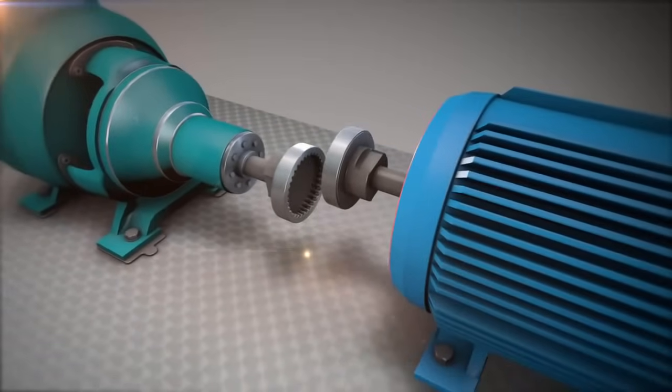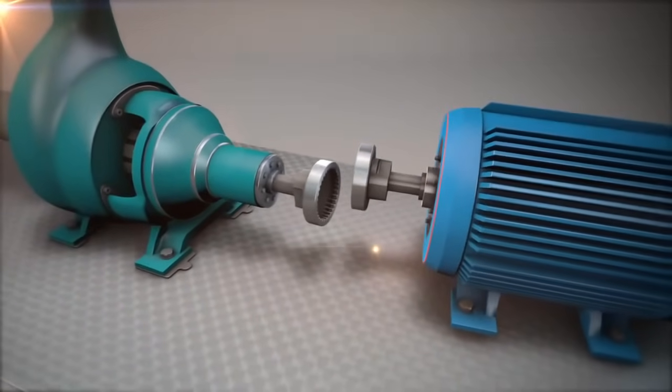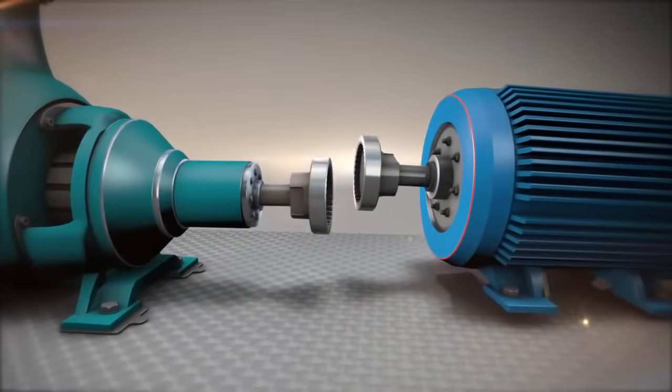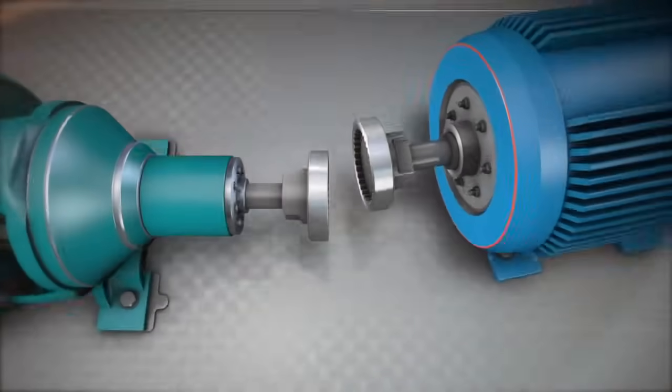Typically, the machines will be misaligned in two ways and in two dimensions. Let's visualize this. Vertical and horizontal.